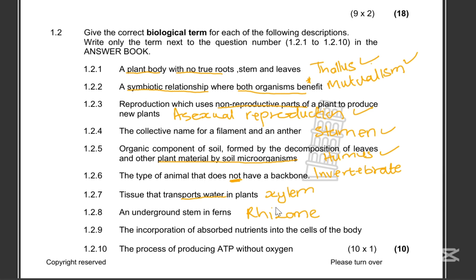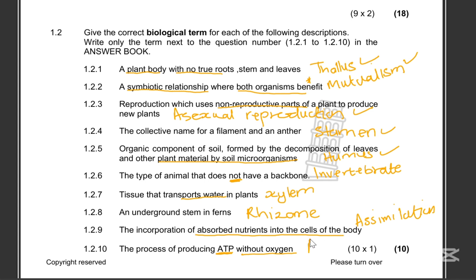1.2.9: The incorporation of absorbed nutrients into the cells of the body — that is assimilation. The last question, 1.2.10: The process of producing ATP without oxygen — so that's anaerobic respiration.